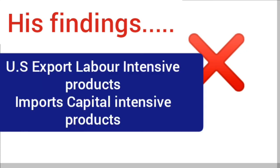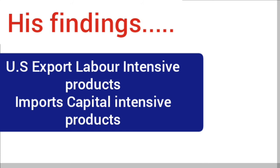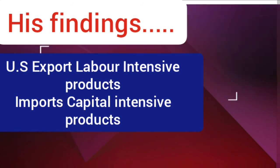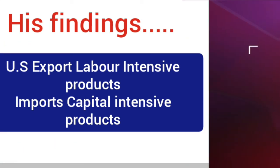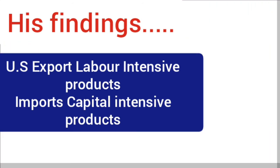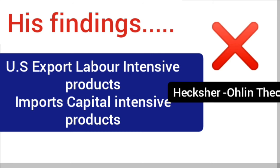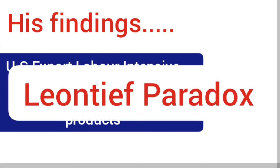From his study, he discovered that the US, in spite of being the most capital abundant country, was exporting more labor intensive products and importing more capital intensive products. Since his conclusion was paradoxical or inconsistent with the Heckscher-Ohlin theory, his conclusion is known as Leontief Paradox.